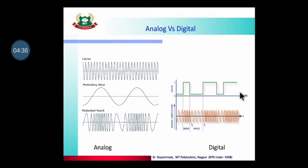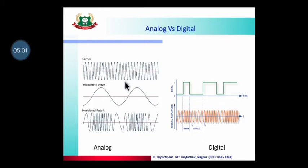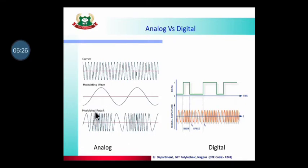One means high level and zero means low level — so our original information is in the form of one, zero, one, zero. This original information cannot travel long distances in analog form, so we modulate it with the help of a high frequency carrier. The carrier signal is always in analog sine wave form — both in analog and digital systems. Only the modulating signal (information signal) differs: in analog it is a sine wave, in digital it is a square wave. This is the main basic difference between analog and digital signals.